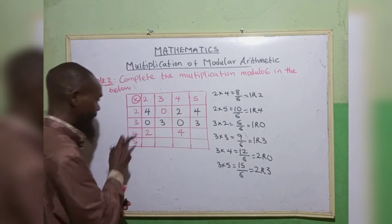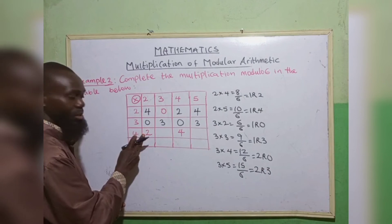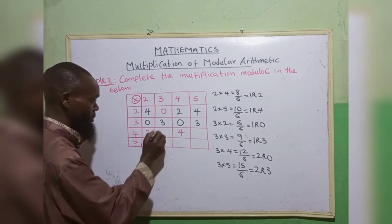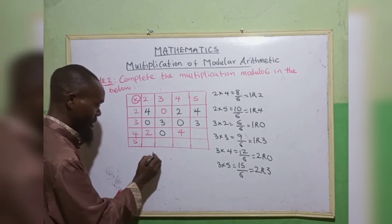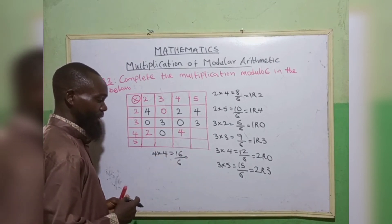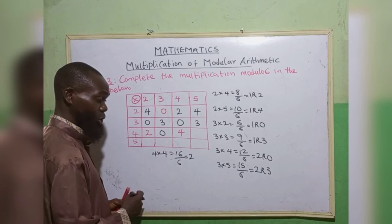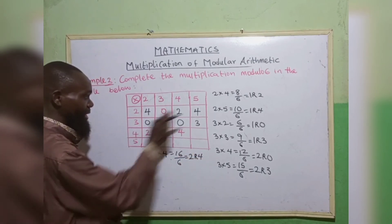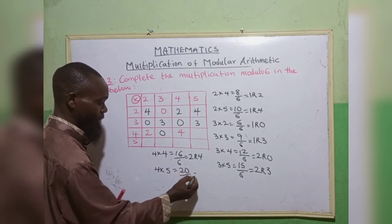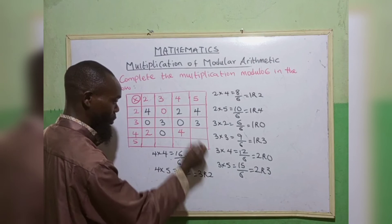Next: 4 times 2 gives 8 — 6 goes into 8 once, remainder 2. 4 times 3 gives 12 — 6 goes into 12 twice, remainder 0. 4 times 4 gives 16 — 6 times 2 is 12, remainder 4. 4 times 5 gives 20 — 6 times 3 is 18, remainder 2. So row 4 gives: 2, 0, 4, 2.